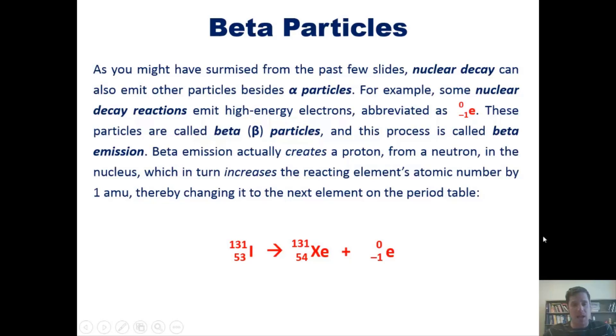If you do the math, you'll notice that iodine here must have 78 neutrons—that's the difference between 131 and 53. How many neutrons are in xenon? Because the atomic mass didn't change, there are 77 neutrons. So one neutron disappeared.